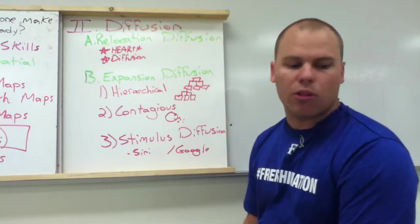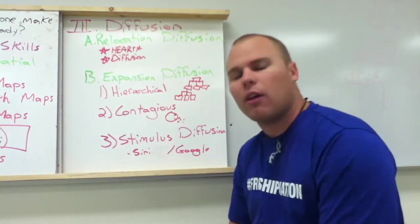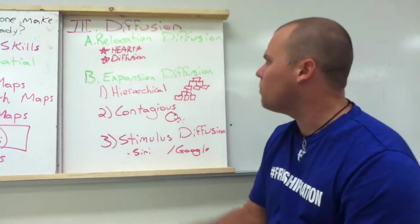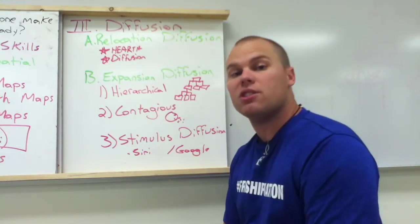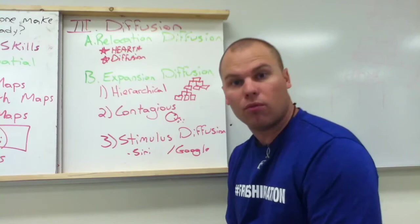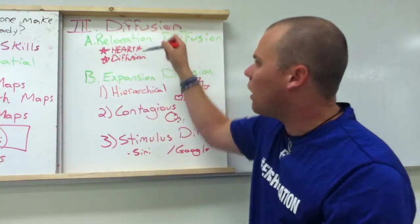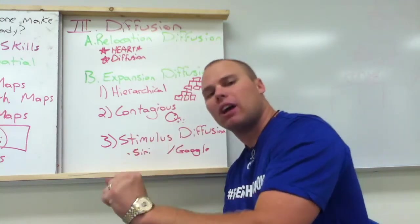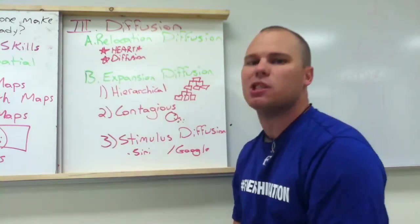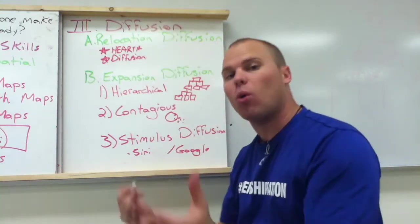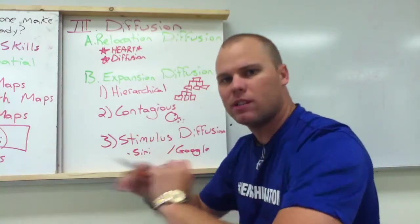We've got a whole other topic — this should be labeled three, not two, so you've got three topics on this one. Your next one is diffusion. There are two types of diffusion. First is relocation diffusion — just like the term refers to, it's the movement of people being relocated. For this to happen, you've got to have a hearth, which is a beginning point of that culture or people group. From that point you then diffuse, you spread. But diffusion does not have to be a total relocation — it can be expansion.